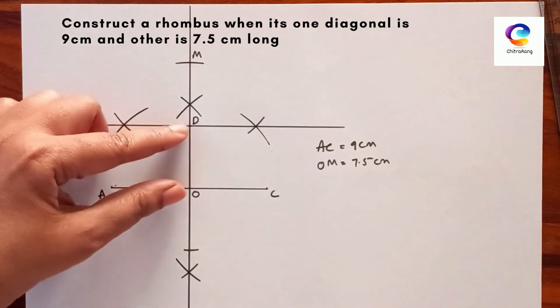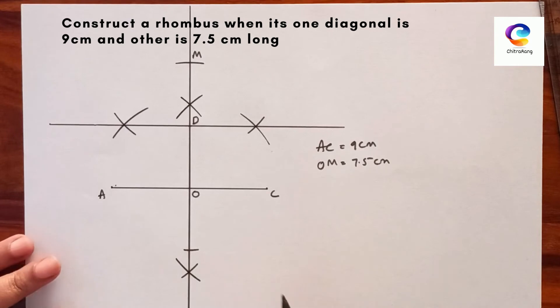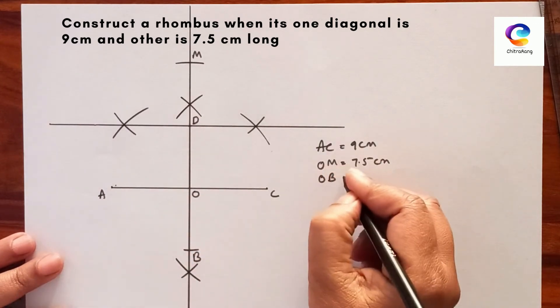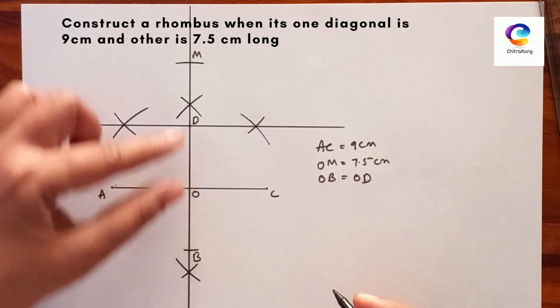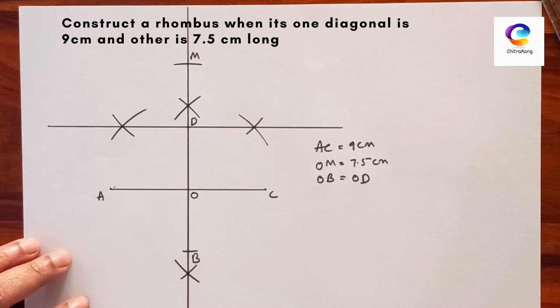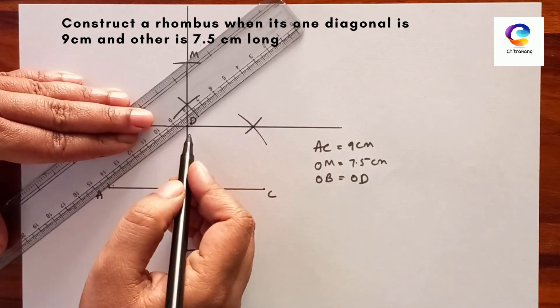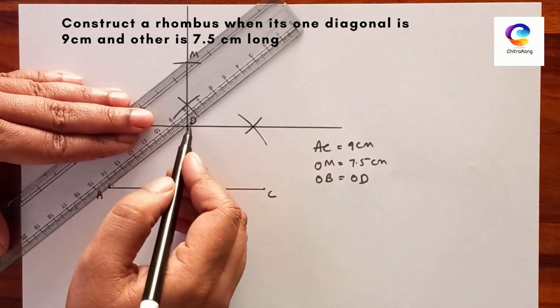You can write here: OB is equal to OD. Join this — because it is the rhombus. You can write down: ABCD is the required rhombus. Thank you.